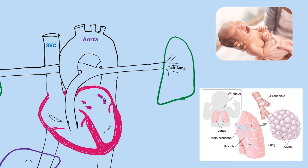When the lungs expand, the blood vessels in the lungs dilate, pulmonary circulation increases, and gas exchange begins. Now that the placenta is no longer working, deoxygenated blood enters the pulmonary artery, goes to the lungs, and gas exchange occurs there.